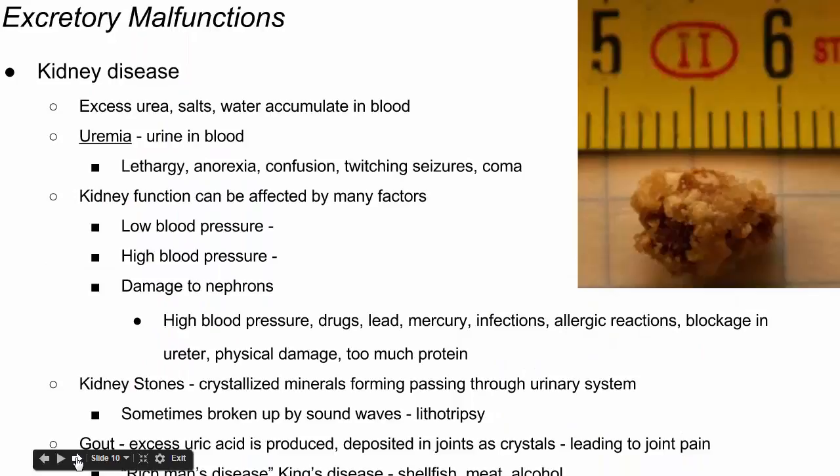Let's talk about some possible diseases and disorders of the excretory system in humans. Kidney disease is a wide-ranging group of diseases. If the kidneys are malfunctioning and not working properly, then the levels of waste products, minerals, and water in the body are not properly regulated, and homeostasis is not maintained. There could be excess urea left in the blood, excess salts, water can accumulate. When waste products normally eliminated in the urine remain in the blood, it's called uremia — meaning urine in the blood.